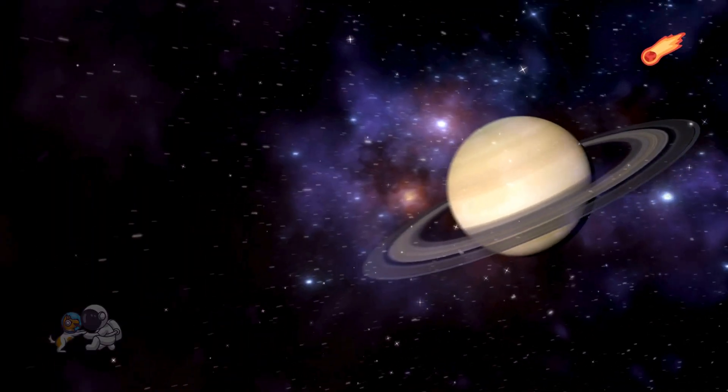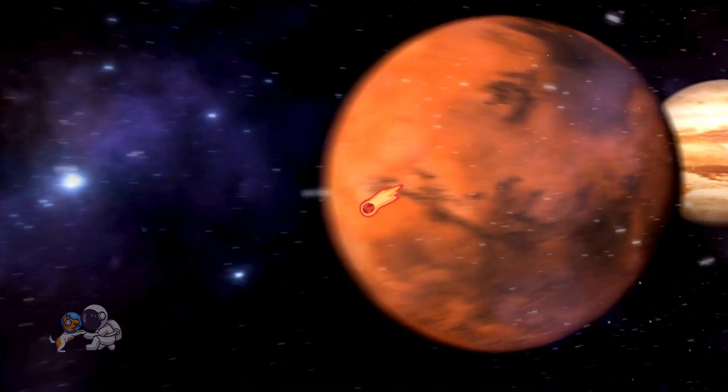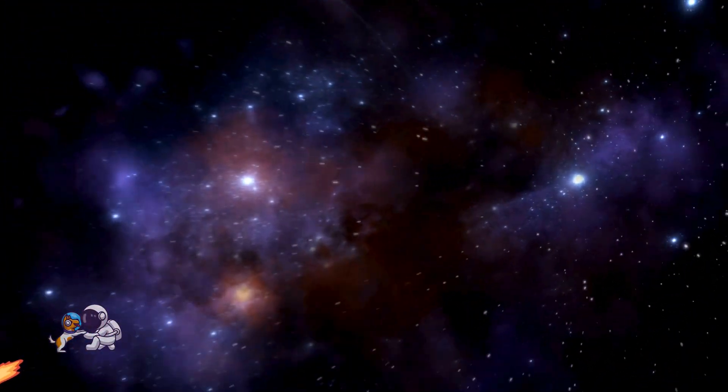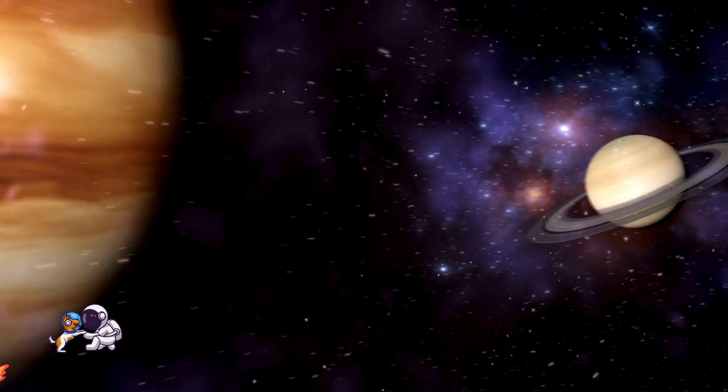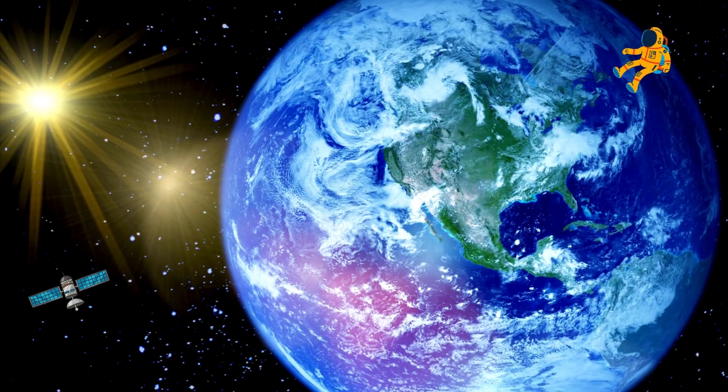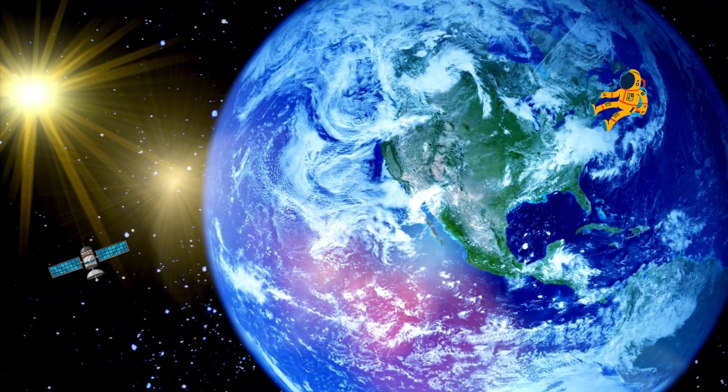round we go. Past the planets, fast or slow. Eight big worlds and moons so bright. Come and learn, it's out of sight. Jupiter's huge with a stormy spot. Saturn has rings, a lot, a lot.